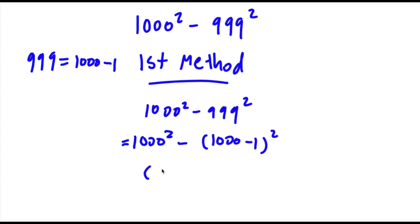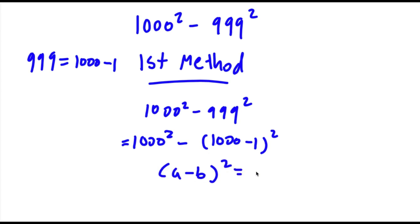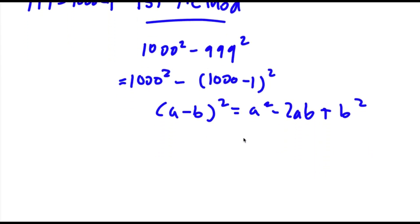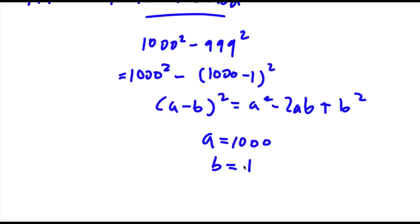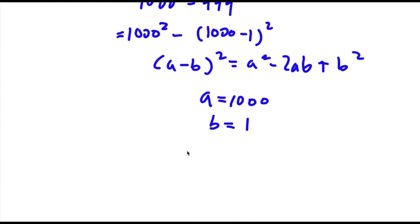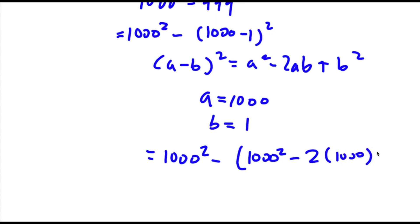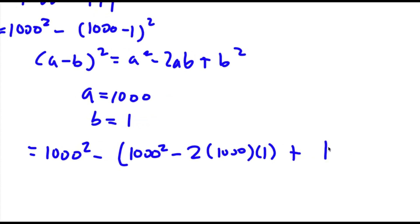Now, if I have something in the form (a minus b) squared, this is equal to a squared minus 2ab plus b squared. So in this case, a is equal to 1000 and b is equal to 1. So this is going to equal 1000 squared minus (1000 squared minus 2 times 1000 times 1 plus 1 squared).